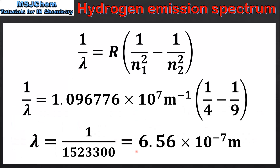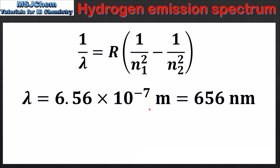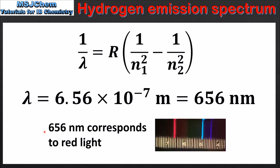The wavelength of light emitted is 6.56 times 10 to the negative 7 meters, which is equal to 656 nanometers. Visible light with a wavelength of 656 nanometers corresponds to red light. So from this we can deduce that the red line was produced by the electron transition from n equals 3 to n equals 2. By doing so the electron emitted a photon of energy that corresponds to red light.